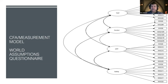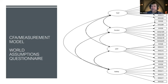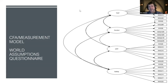In a measurement model, the path goes from the construct to the items — these are reflectors. If it's the other way around, that's partial least squares modeling, which is more of a composite approach — a whole other area of SEM that I have strong feelings about but will leave for another time.